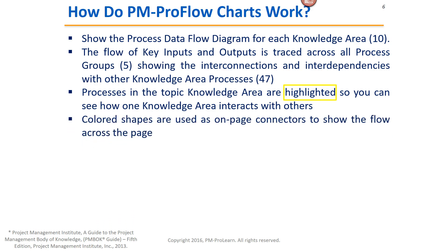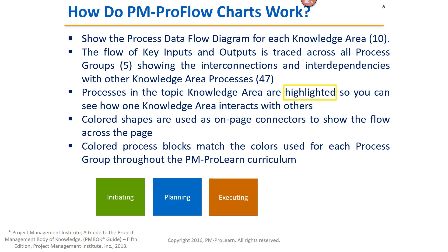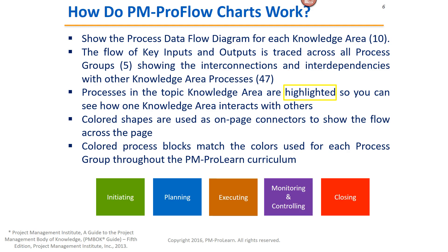Colored shapes are used as on-page connectors to show the flow across the page, because there's a lot going on, so we need to show you how things are connected. Colored process blocks match the colors used for each process group throughout our PMProFlow curriculum. Everything that's an initiating process is green, planning is blue, executing is brown, monitoring and controlling is purple, and closing is red. That helps keep you oriented every time we're talking about anything in the project management body of knowledge — oriented to what process group you are in.